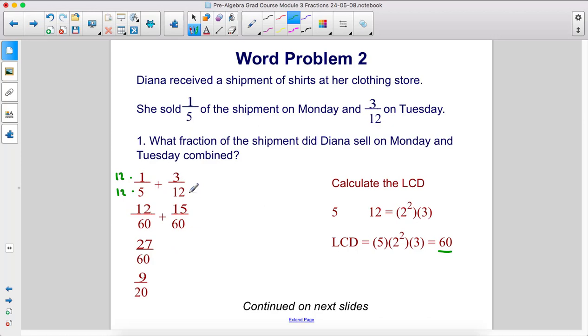Here, we need to multiply this 12 by 5 to get it to be 60. Therefore, we're also going to multiply the numerator by 5, and that's how we get 15.